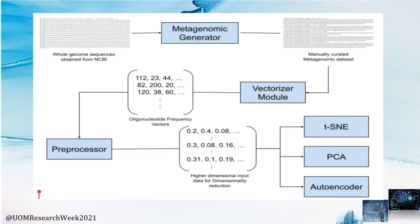This diagram shows a high-level overview of the first part of our research. Since we are benchmarking autoencoders against techniques like PCA and T-SNE, we needed to know the ground truth labels of sequences in a metagenomic dataset. This prompted us to make our own metagenomic dataset using whole genome sequences from NCBI. Our metagenomic generator produces manually curated metagenomic datasets with ground truth labels. We then used the vectorizer module to do k-mer counting, and the resulting k-mer frequency vectors are fed into the preprocessor for basic preprocessing like shuffling and normalizing. This matrix is then the input to T-SNE, PCA, and autoencoders, which produce lower-dimensional representations.